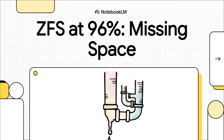Have you ever been in this spot? It is so frustrating. You delete terabytes of data from your ZFS pool, and you're just waiting for all that lovely free space to come rushing back. But nothing happens. Literally, not a single byte is freed. Today, we're going to crack open this exact mystery — the case of the missing space when your ZFS pool hits that dreaded 96% mark.